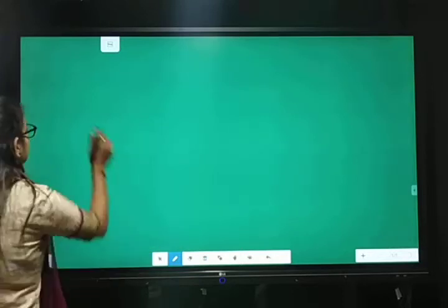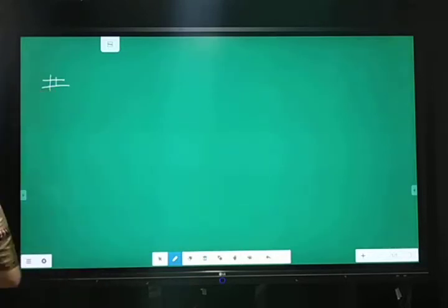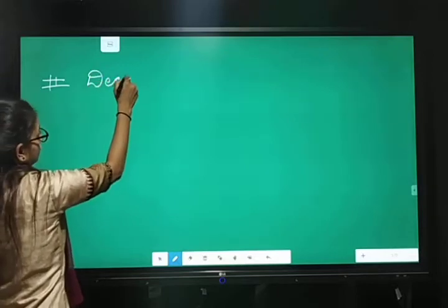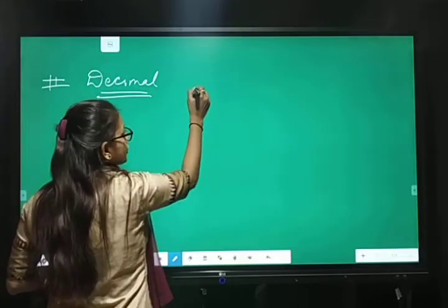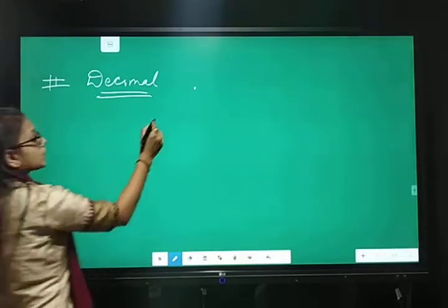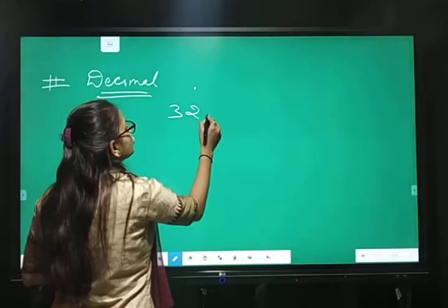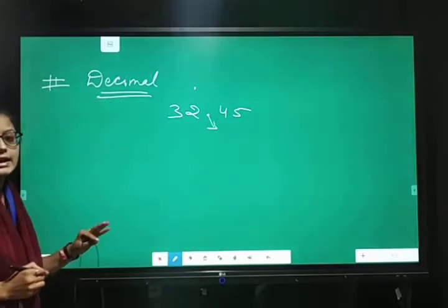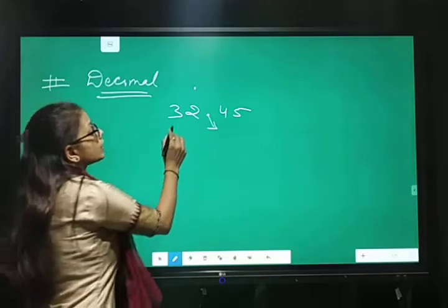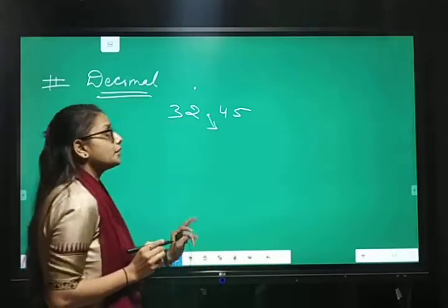Next topic is decimal. We know that point se isko represent karte hai like 32.45. So, this point is called decimal point. Clear? 32.45.